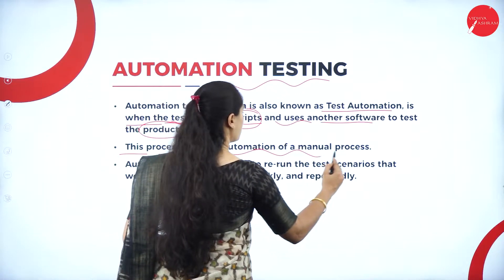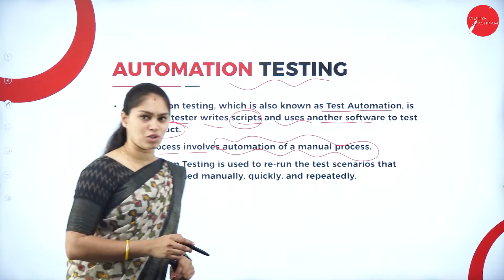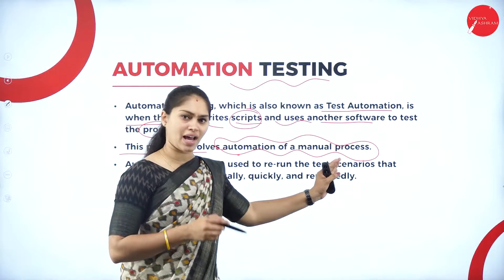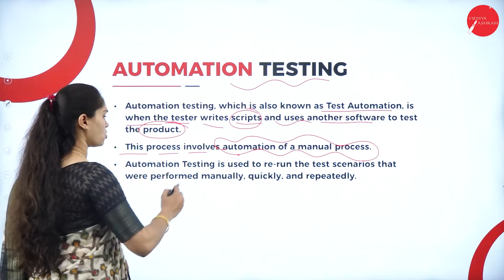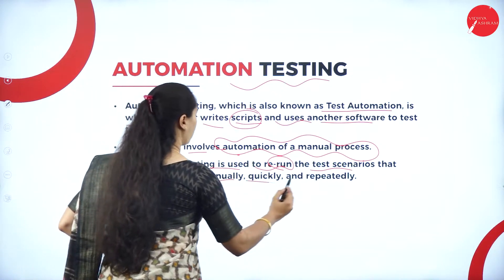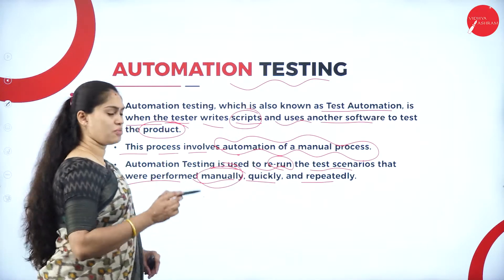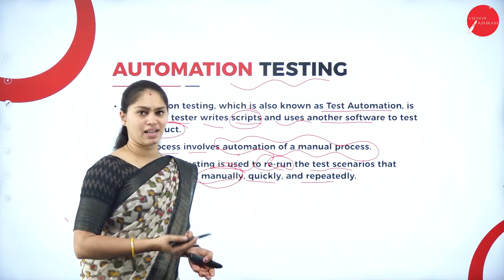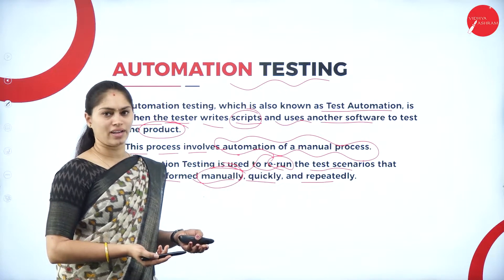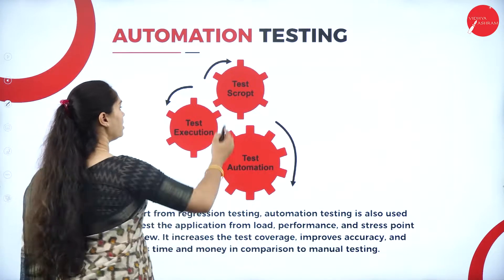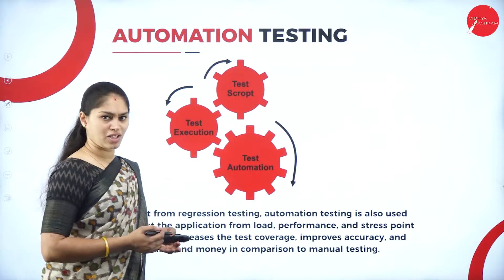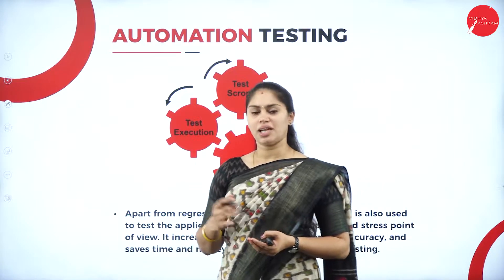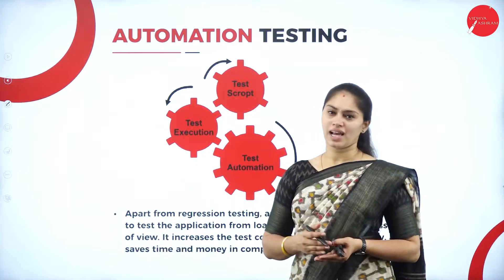This process involves automation of a manual process — instead of doing it manually, we use automation tools. Whatever processing is done manually gets converted into an automated one so it can rerun test scenarios that were performed manually, quickly and repeatedly. The same type of testing can be done more than once. Test scripts and test execution are repeated in nature, and tests can be run using the automation tools based on a written script.